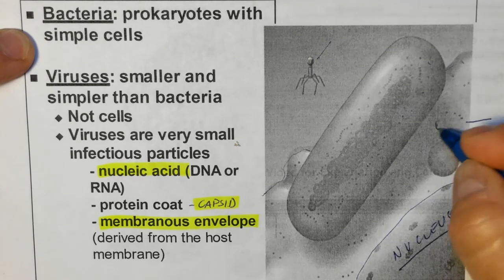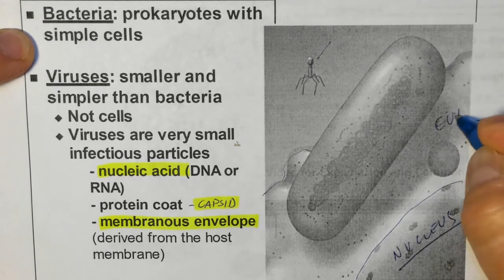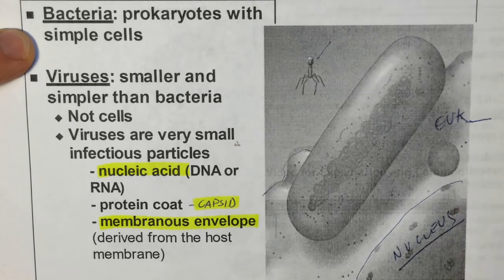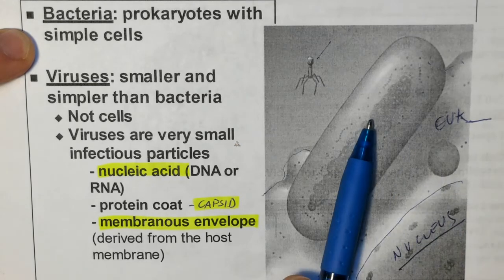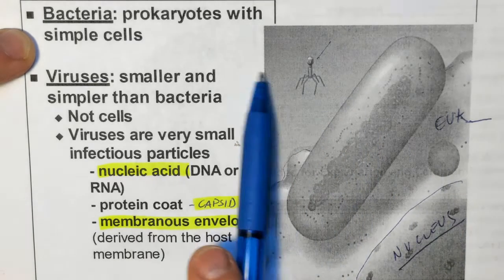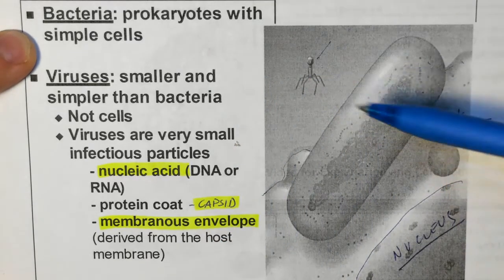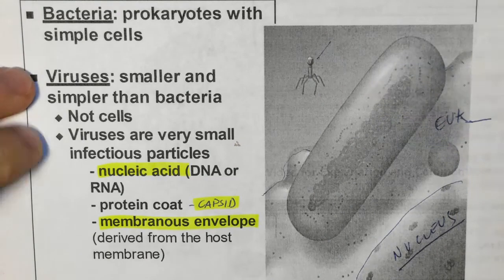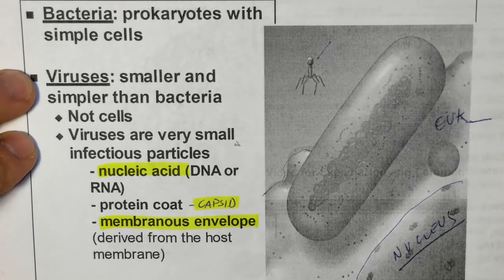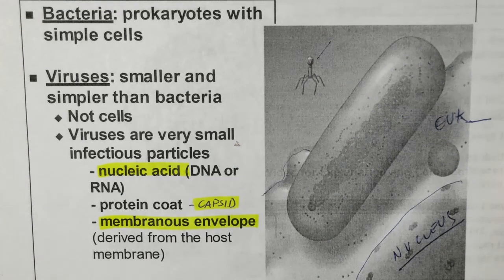You can visually see how big a eukaryotic cell is, a bacteria much smaller, and then the virus, very tiny. This is just to illustrate that viruses are much, much smaller than bacteria.